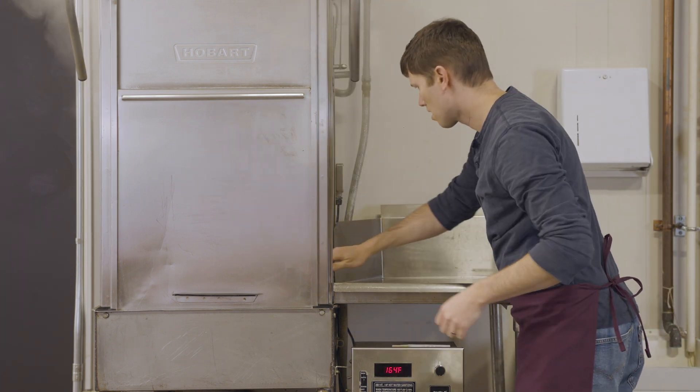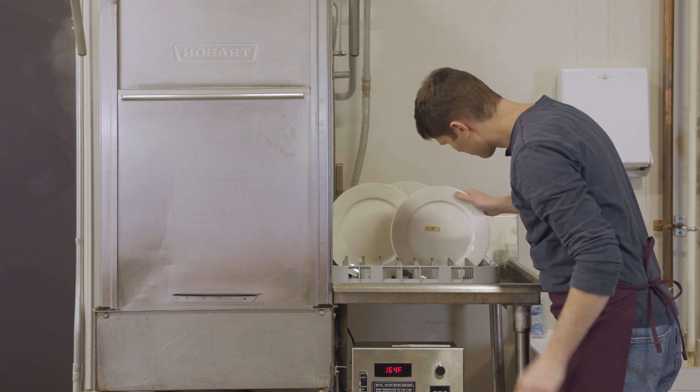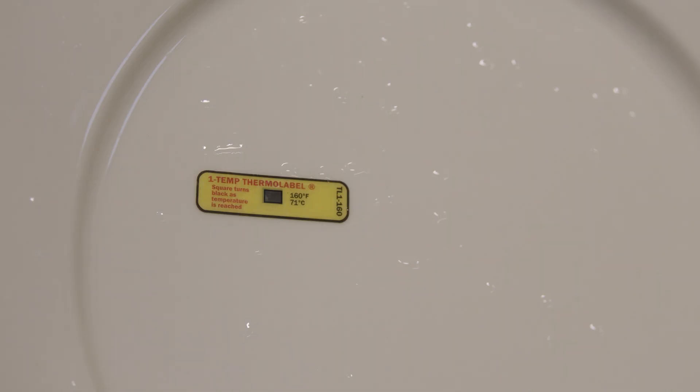After the cycle is complete, we wait a minute, open the dishwasher and observe the temperature label. If the white square has turned black, the dishwasher has effectively sanitized the dish.